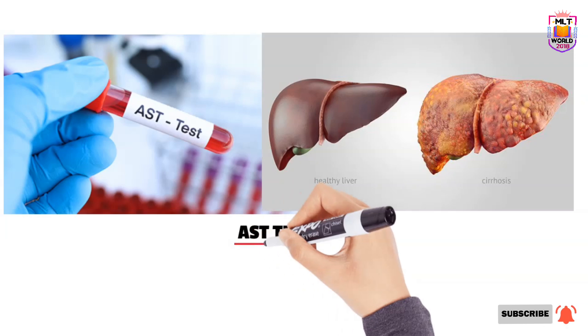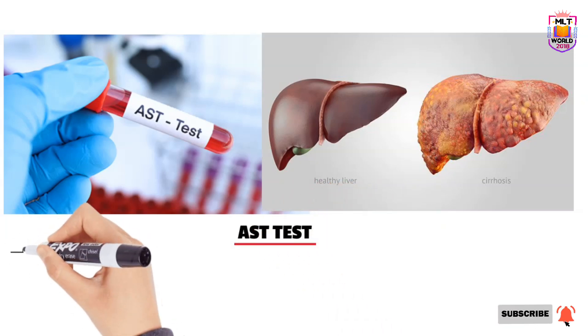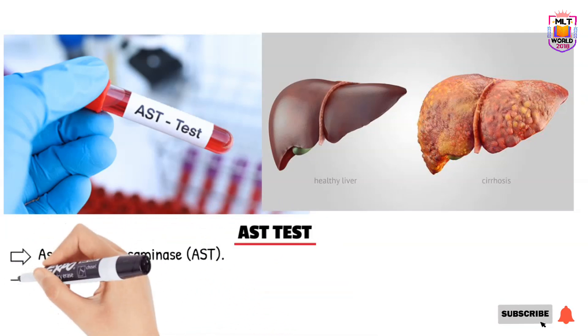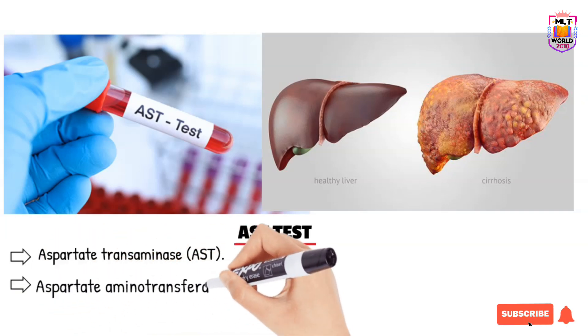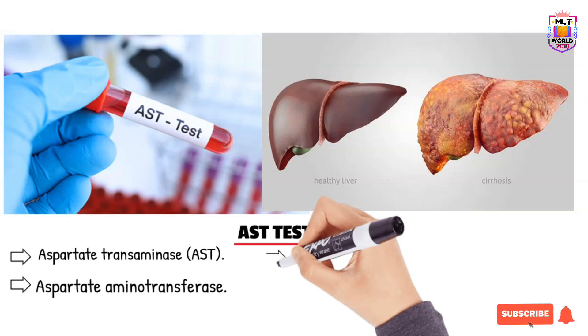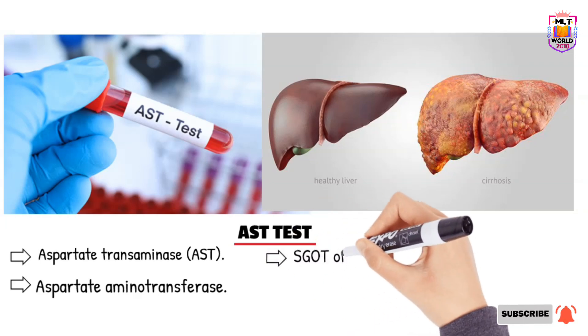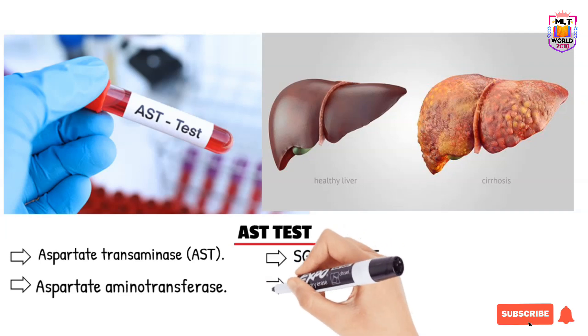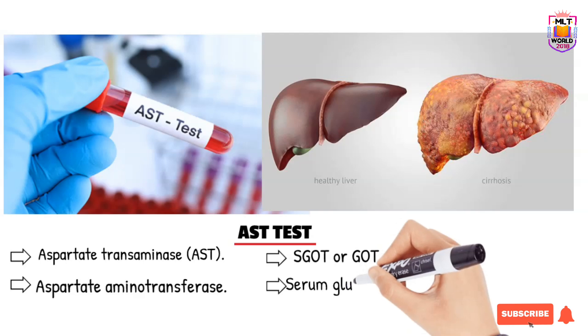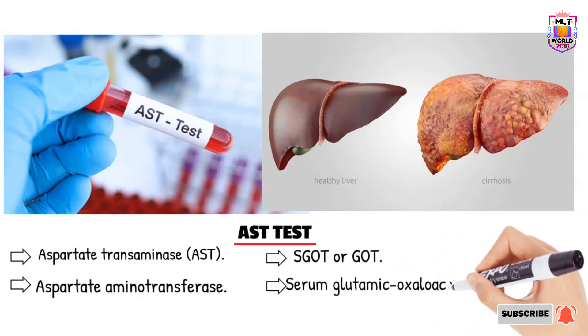First of all, we will see what AST stands for and what are other names of AST. AST stands for aspartate transaminase. Other names are aspartate aminotransferase, SGOT or GOT. SGOT stands for serum glutamic oxaloacetic transaminase.